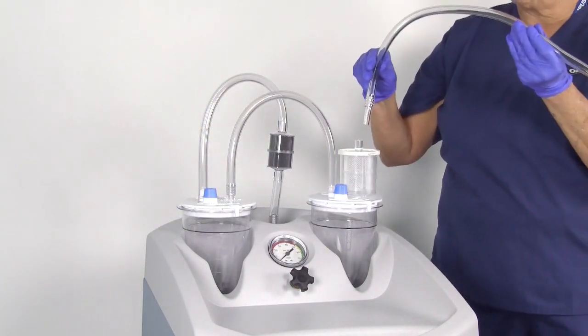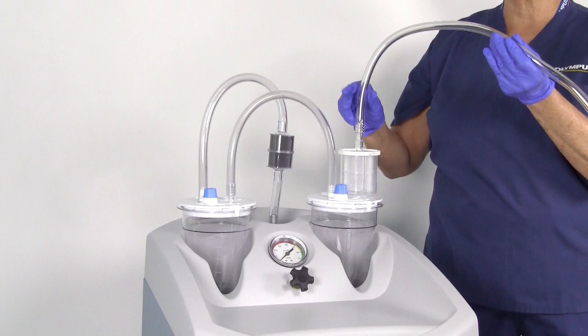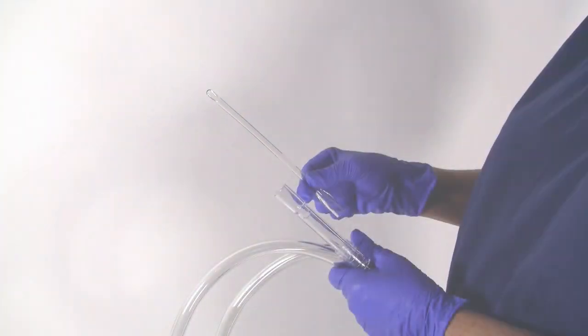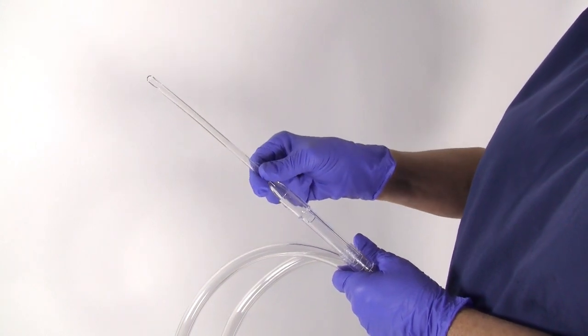Attach the male end of a sterile 3-8-inch collection tubing set to the top of the tissue trap. Select and attach a sterile vacuoret cannula.